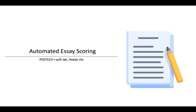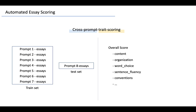Hi, this video shows the implementation of our automated essay scoring system. Our system is based on cross-prompt trait scoring, which uses different prompts for the train and test sets and gets the score for each specific trait. This means that our system can predict not only unseen essays, but also essays for unlearned prompts.